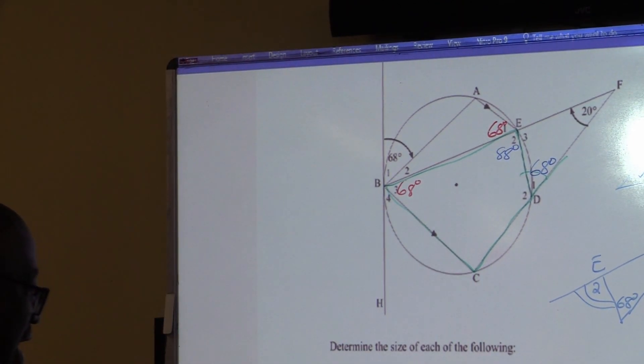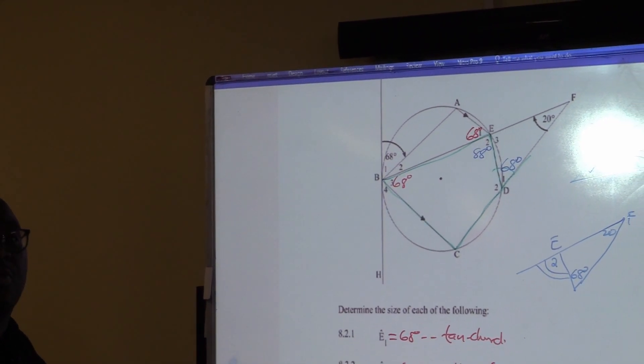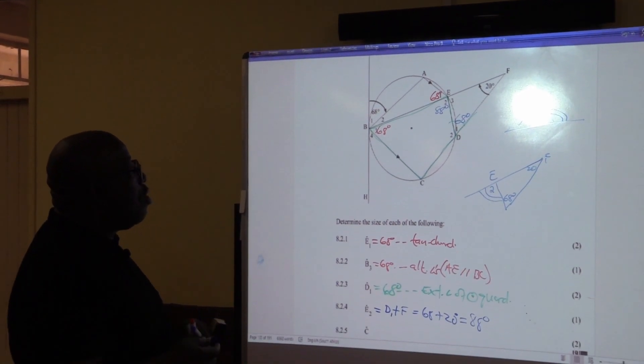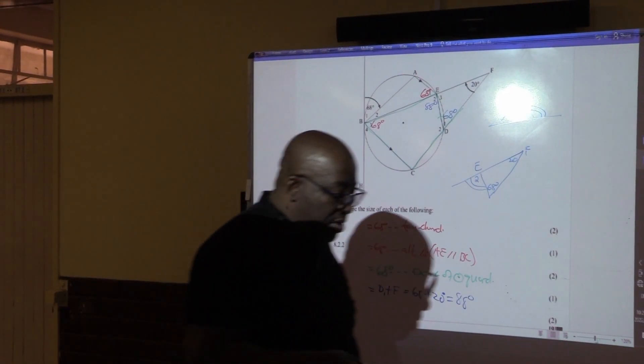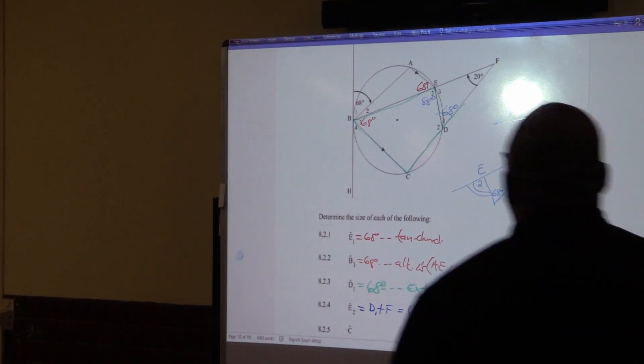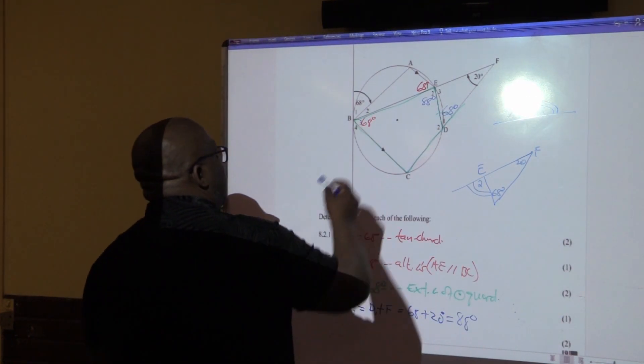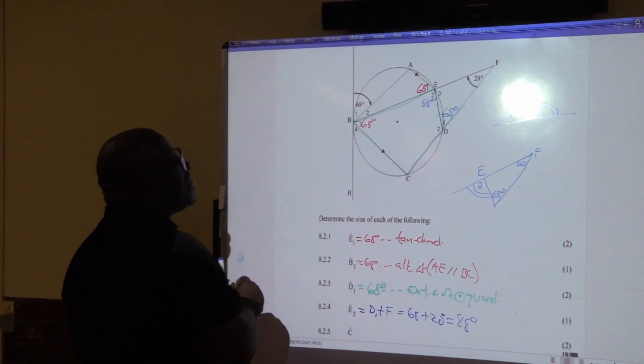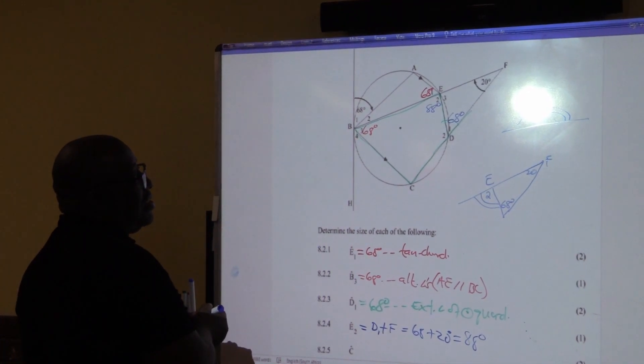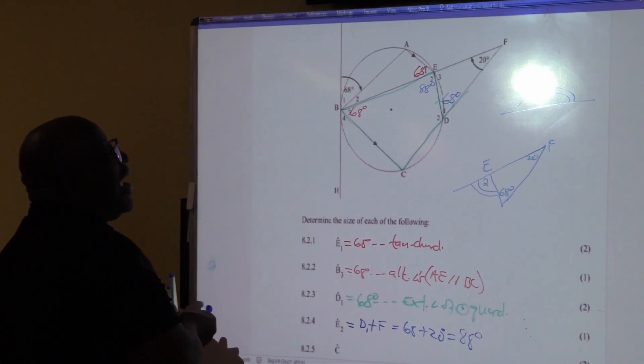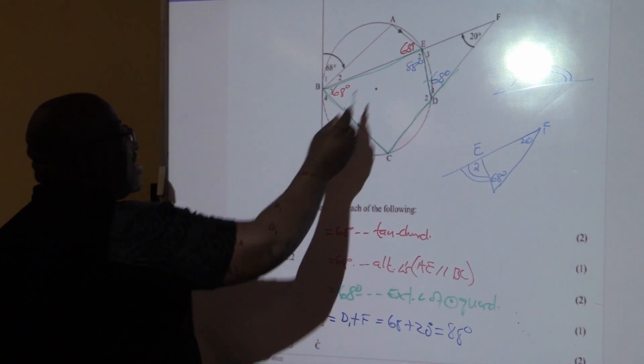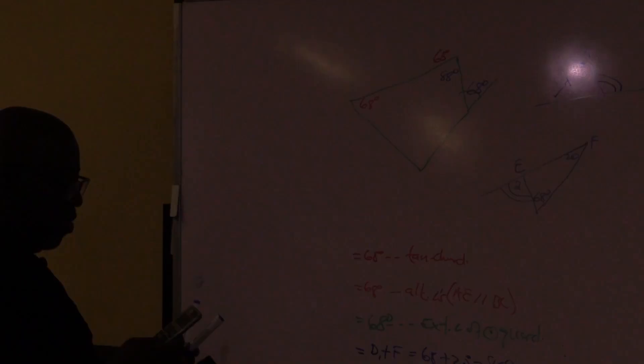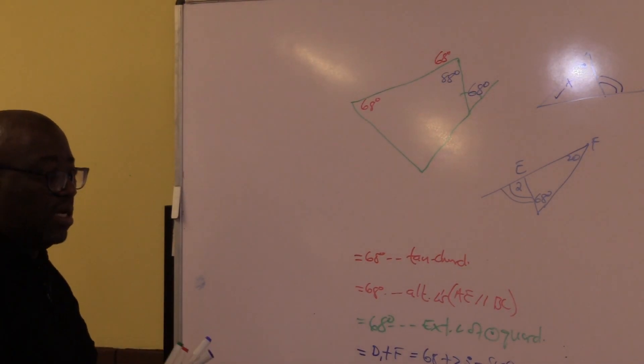So D2 will be 88. The next question is looking for C. How do we go about find C? Remember, our C in this particular case. There is a cyclic quad here. There is a cyclic quad. And we know that this one plus this one must give us 180 degrees. Hence 88 plus C must give me that. So this angle plus this angle is equal to 180 degrees. The sum of opposite angles of a cyclic quad.